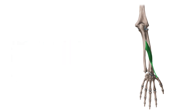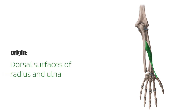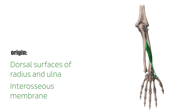The abductor pollicis longus muscle originates at the dorsal surfaces of both the radius and ulna and the interosseous membrane. This muscle also lies just below the supinator muscle.